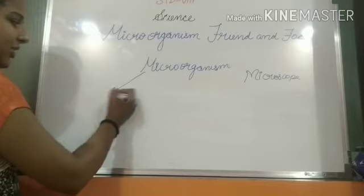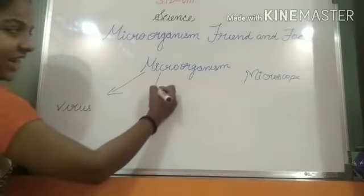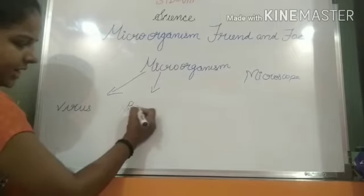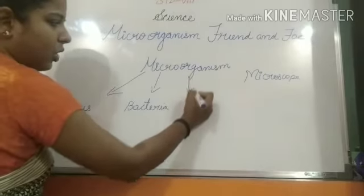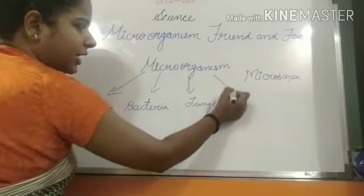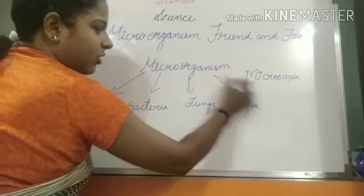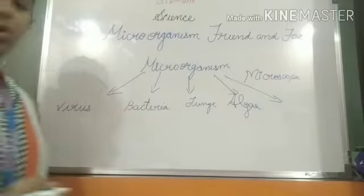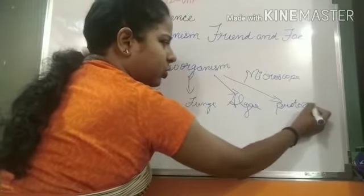The high categories: first is virus, second is bacteria, third is fungi, fourth is algae, and fifth is protozoa.